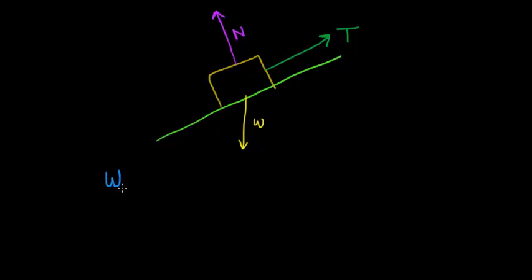The net work done or the total work done would be the work done by the applied force T — let's call it W_A for applied force — plus the work done by the normal force.